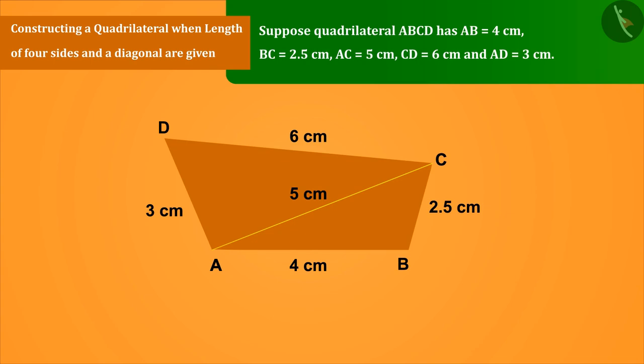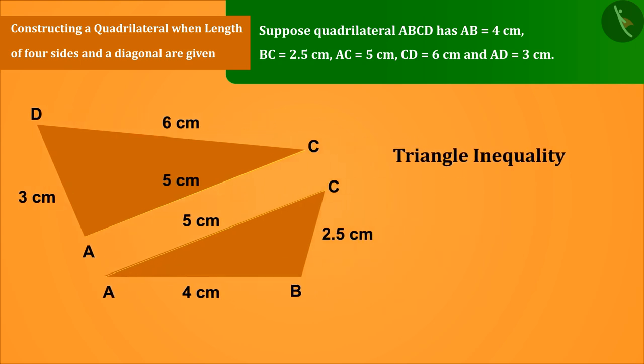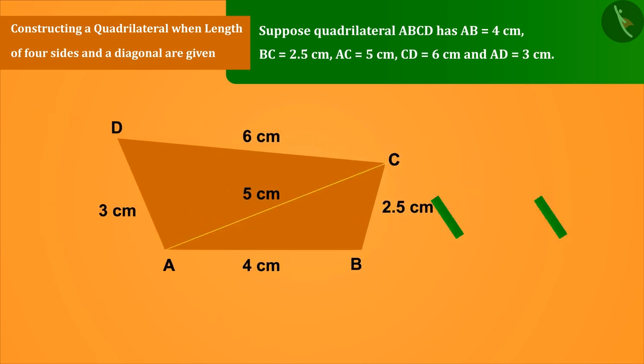We know that a diagonal of a quadrilateral divides it into two triangles. For example, here the diagonal AC divides the quadrilateral into triangle ABC and triangle ADC. We can see that the construction of triangle ABC and ADC is possible according to triangle inequality because the sum of any two sides is greater than the third side. Let us first construct a triangle ABC.